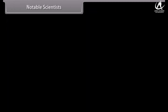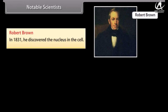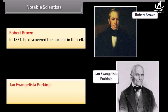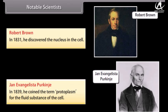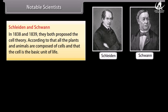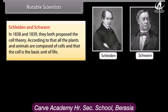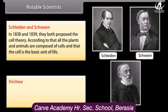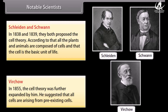Notable scientists: Robert Brown in 1831 discovered the nucleus in the cell. Jan Evangelista Purkinje in 1839 coined the term 'protoplasm' for the fluid substance of the cell. Schleiden and Schwann in 1838 and 1839 proposed the cell theory, stating that all plants and animals are composed of cells and that the cell is the basic unit of life. Virchow in 1855 further expanded the cell theory, suggesting that all cells arise from pre-existing cells.